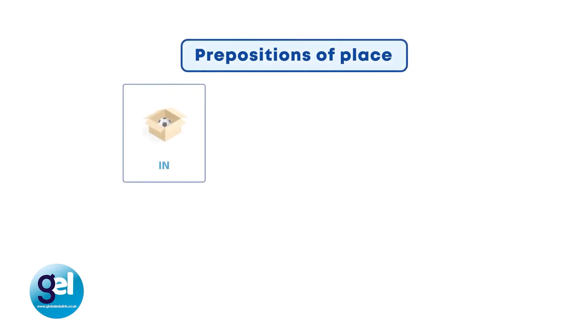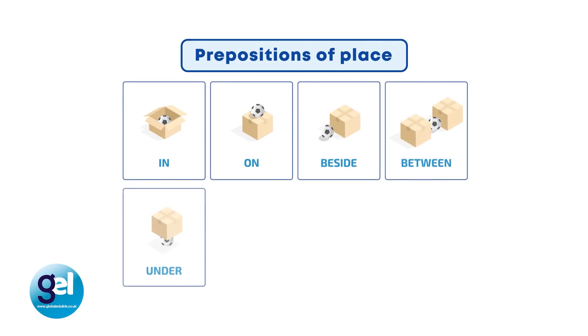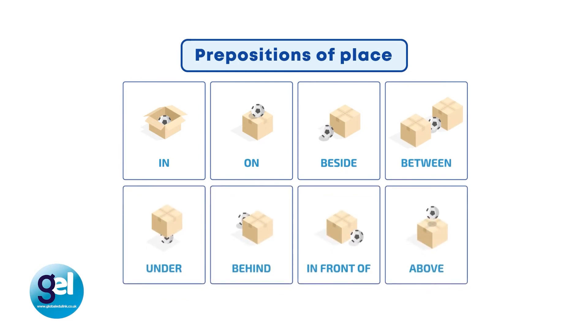Prepositions of place: using pictures or visuals is a really effective method when teaching prepositions. If you're teaching young learners, use some kind of toy, doll or puppet to make it more engaging. You could have a toy teddy and the teddy is sitting in the box, on the table, beside the table, between the tables, under the table, behind the table, in front of the table and above the table.